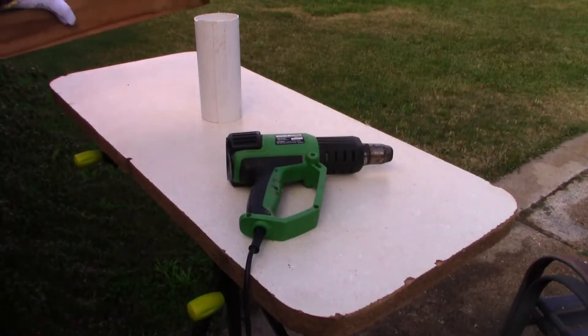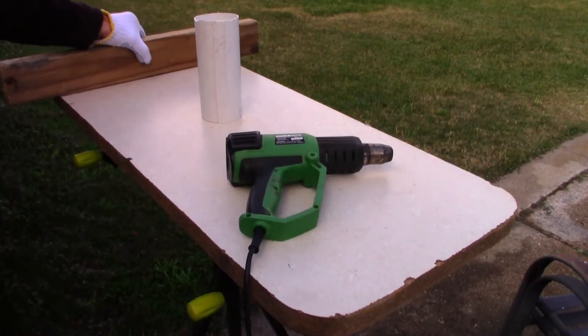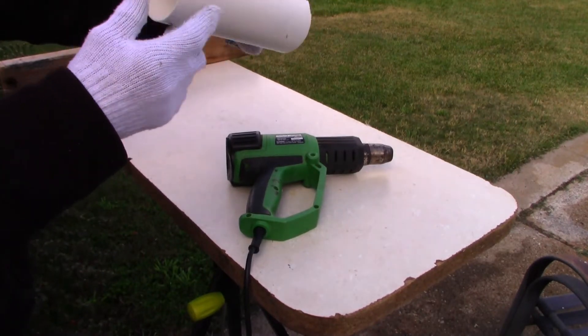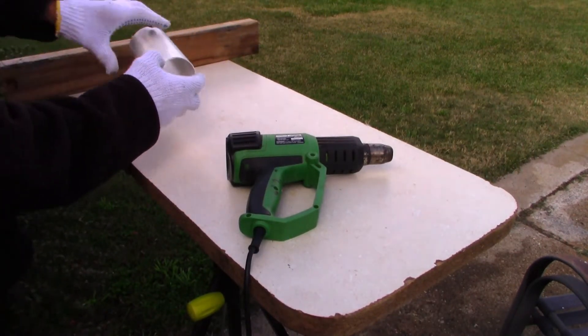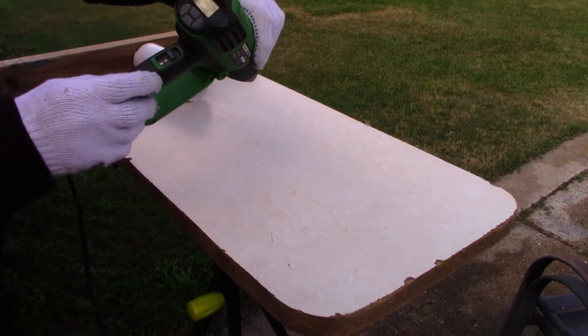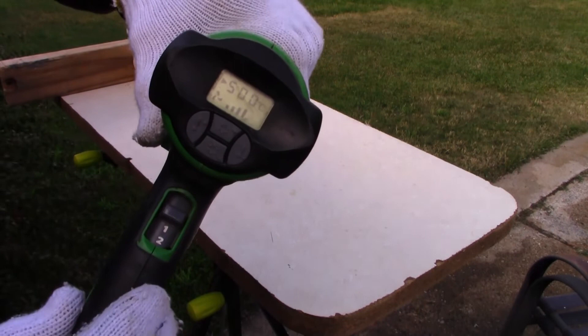So we'll start. We'll just put the lumber there. We'll get the pipe, three inch pipe, and just turn the heat gun on.